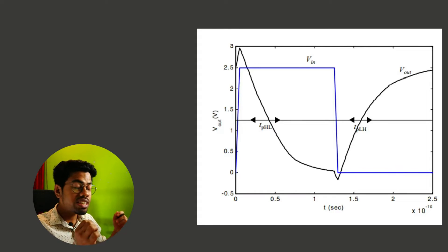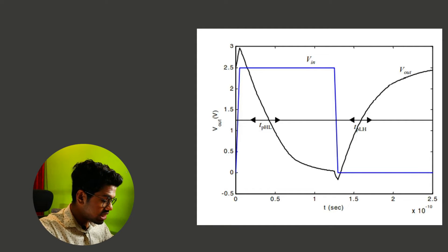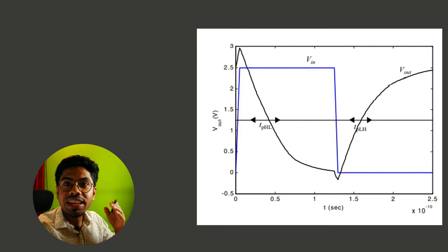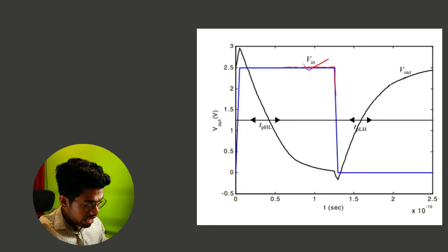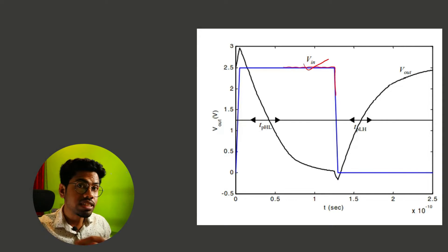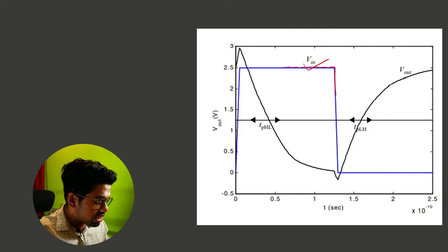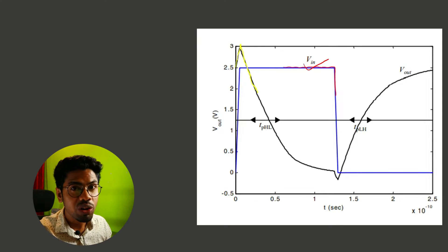The question is this: This is the practical output of any CMOS inverter. This blue curve is your input, and if you give it to a CMOS inverter, the practical CMOS inverter, you'll get something like this yellow curve.